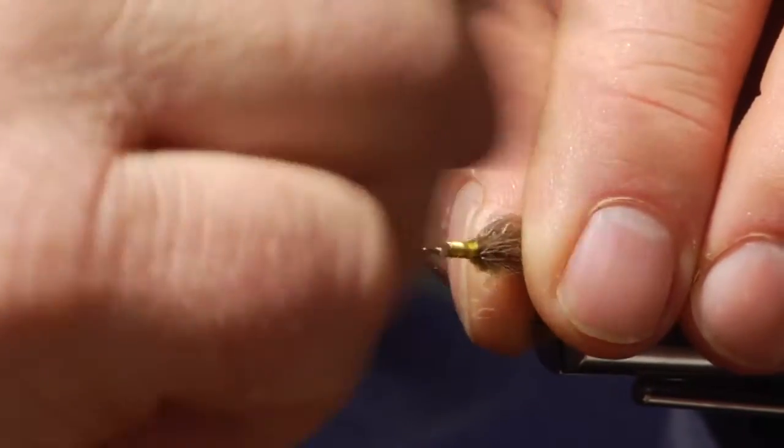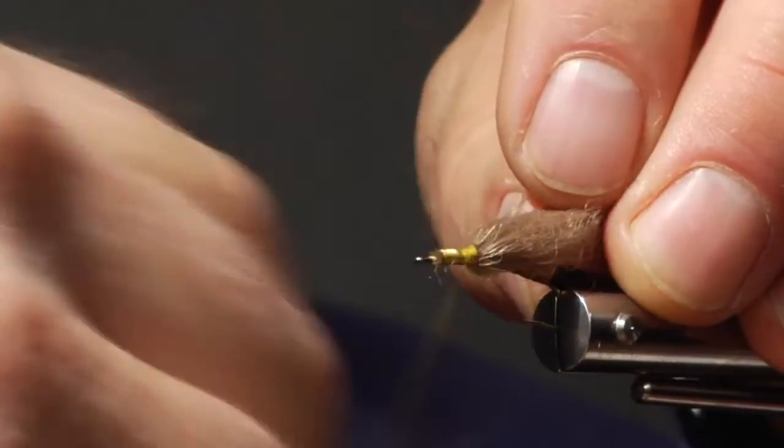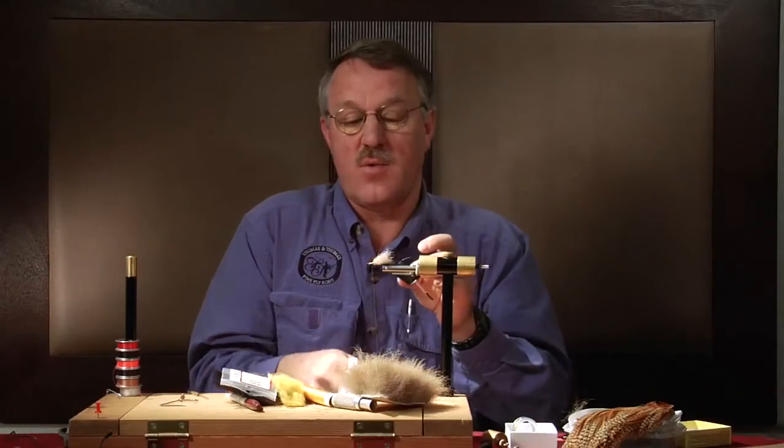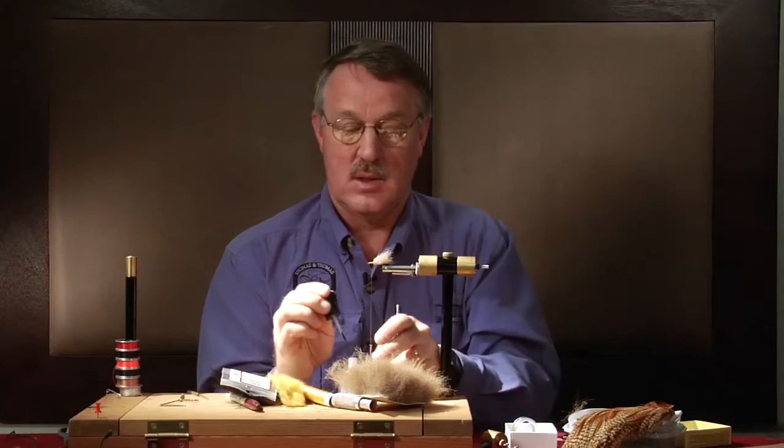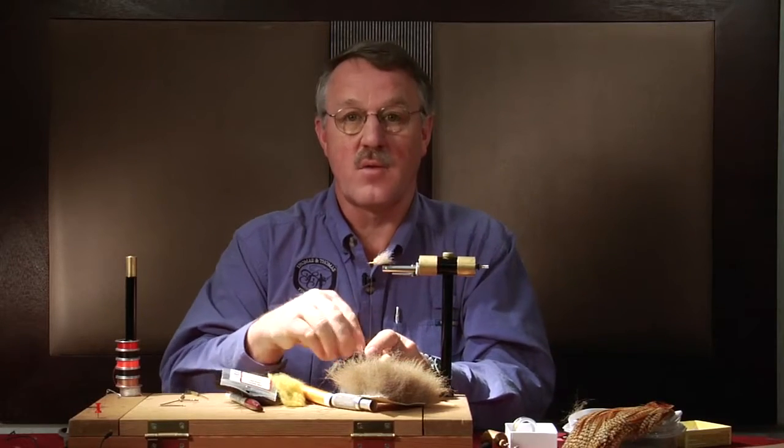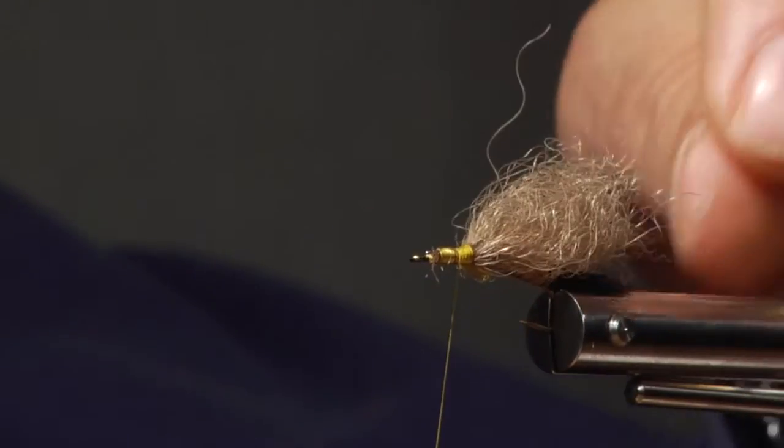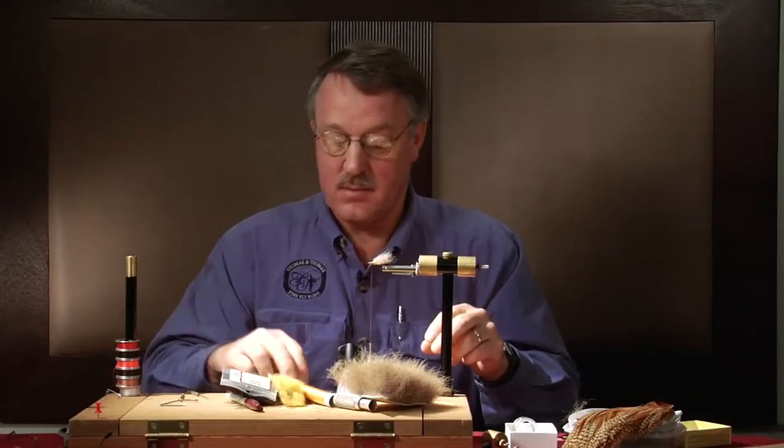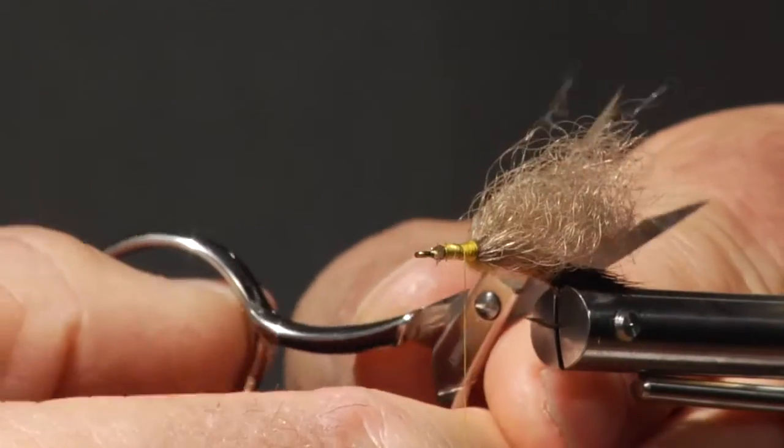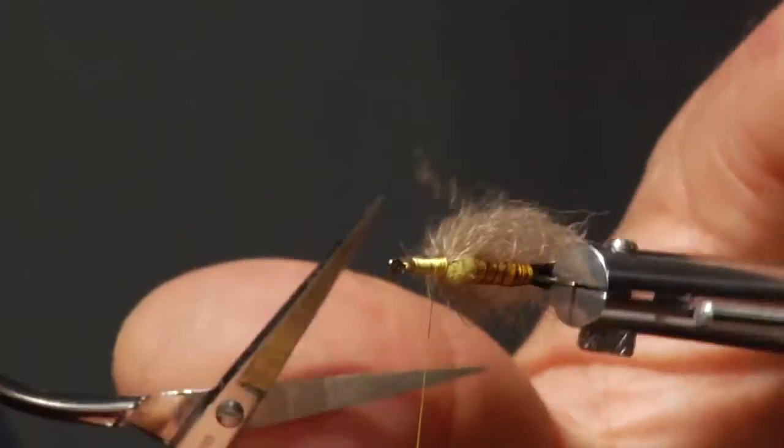It's a nice flat wing. And that's what we're looking for. Fluttering golden stoneflies aren't big, when they get on the water, they're trapped and their wings lay flat. They cannot fly off the water once they're on it. So I want a nice flat wing. And that's what this bear hair will give us. And then you can trim this to shape. Nice shape.